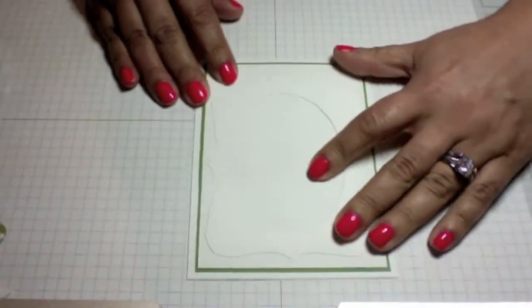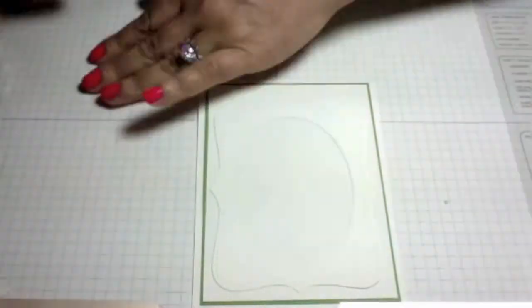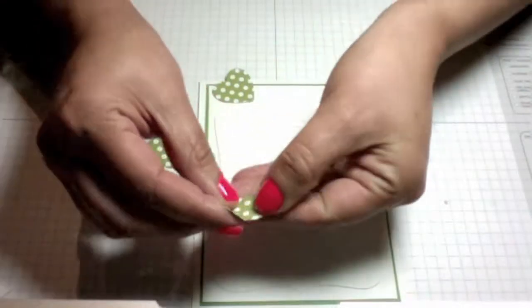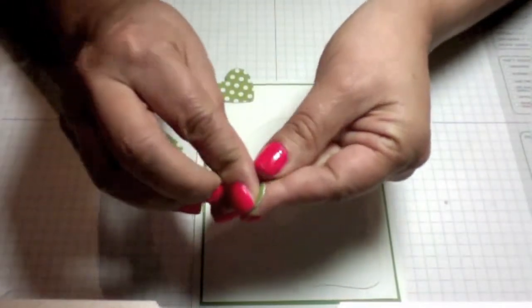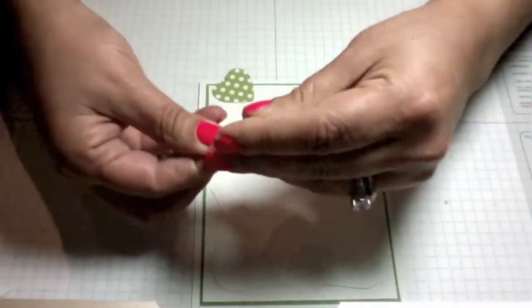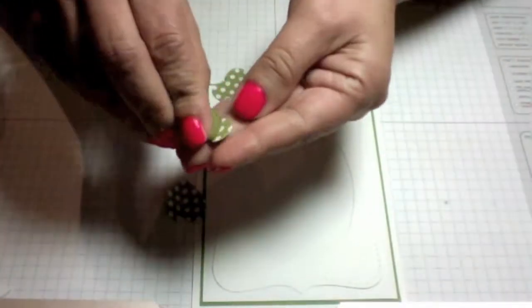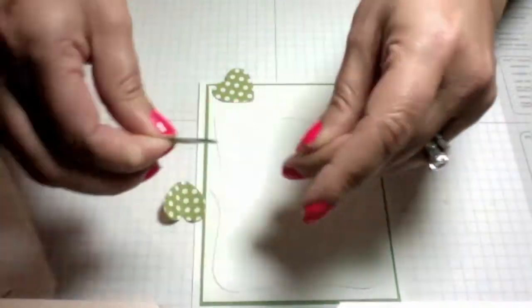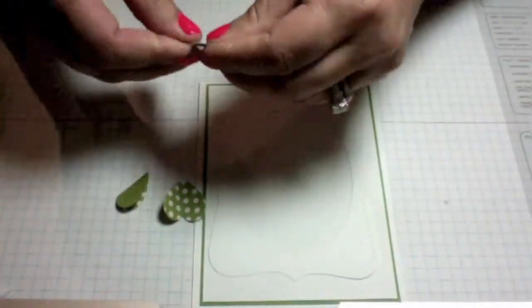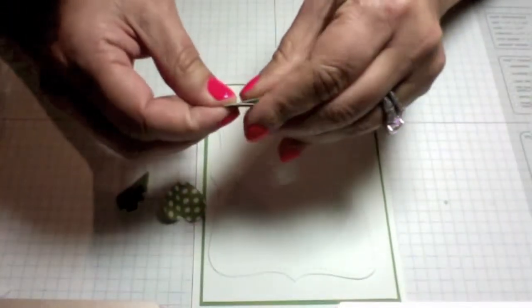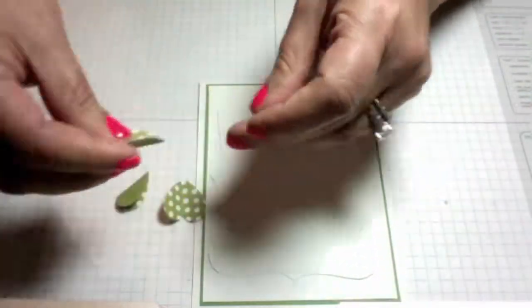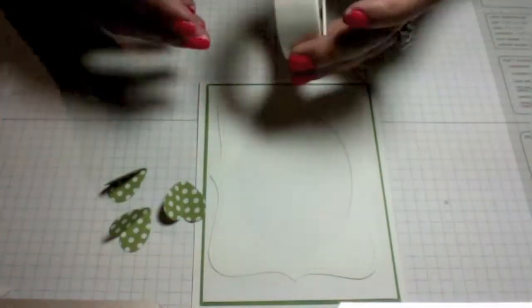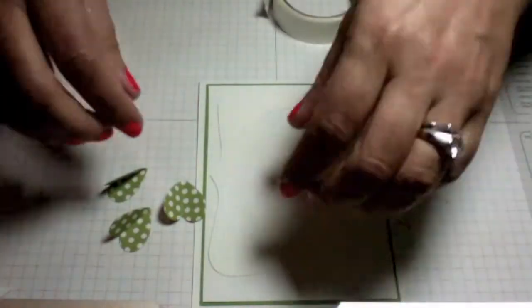When the hearts are placed folded in half, they will create dimension. We're going to use some glue dots in order to adhere them. You want to put the mini glue dots at the very tip of the heart.